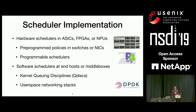Packet scheduling can be implemented in multiple places in the network — in hardware or in software. Hardware implementations include FPGAs, ASICs, MPUs, in switches or NICs. Software implementations include in-kernel settings such as the TCP/IP stack or kernel queuing disciplines (QDISC), or in user space settings. This illustrates the diversity of settings where packet scheduling is typically used.